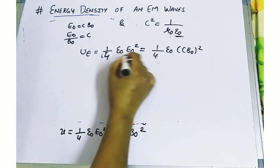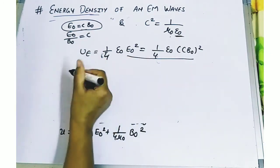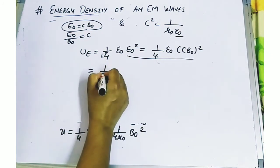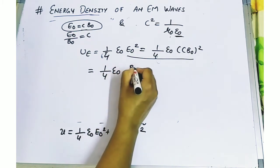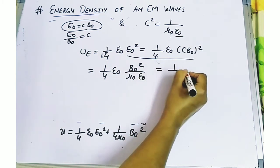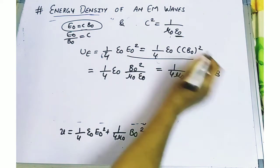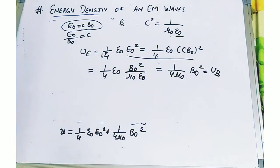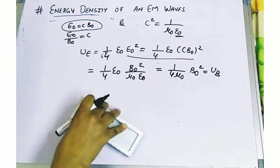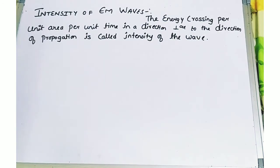Substituting c²B₀² and simplifying, we get: one-quarter epsilon naught times B₀² upon mu naught epsilon naught, which equals one-quarter mu naught B₀² — equal to UB. Hence the average energy density of the electric field equals that of the magnetic field in an electromagnetic wave, confirming that UE equals UB.